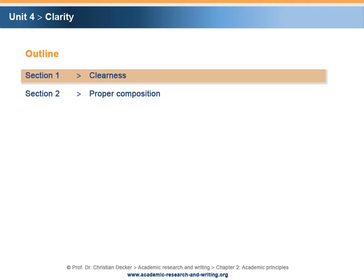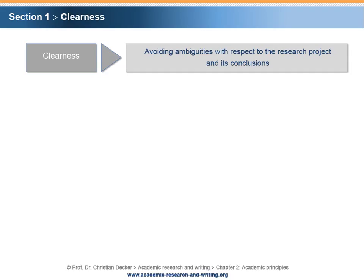Section 1 – Clearness. The principle of clarity implies a sufficient degree of clearness of the research work. Clearness is designed in order to avoid ambiguities with respect to the research project and its conclusions. There are a number of aspects that have a direct impact on the clearness of a research project.